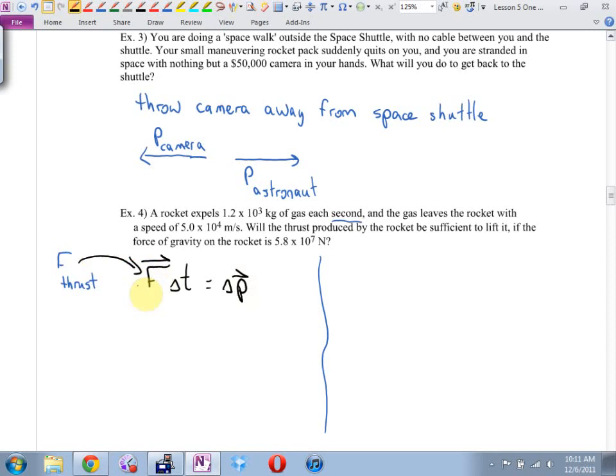Change in momentum equals change in momentum. Where this force here is the thrust of the rocket itself. Let's get the thrust by itself. I think I'll get force equals the change in momentum divided by the change in time. How much time? Well, the amount of time they give me is every single second. So I think change in time is just going to be one, which is going to be nice.